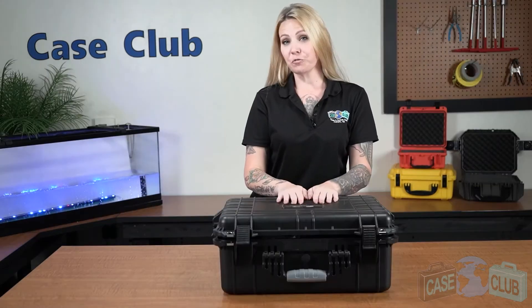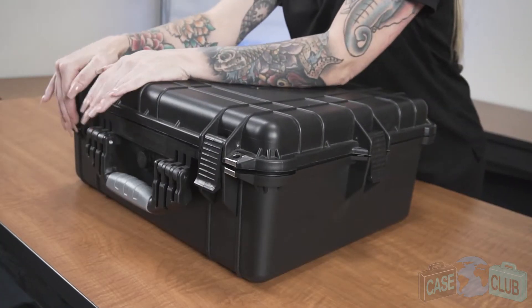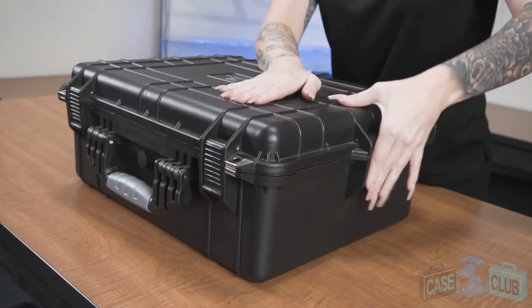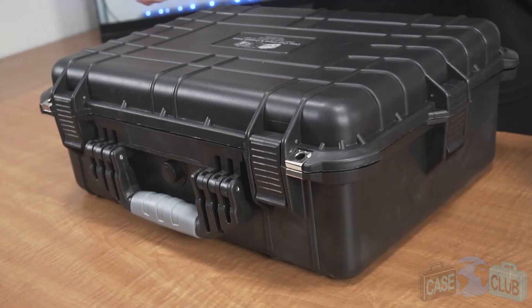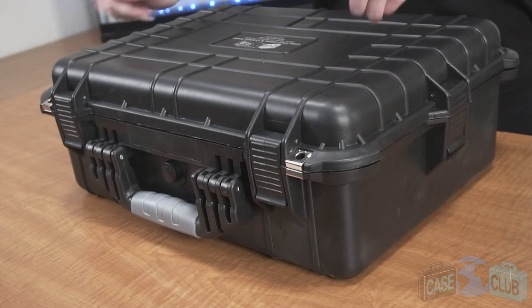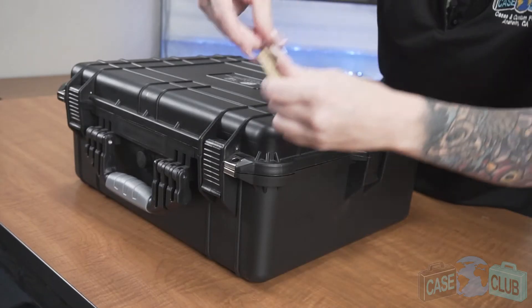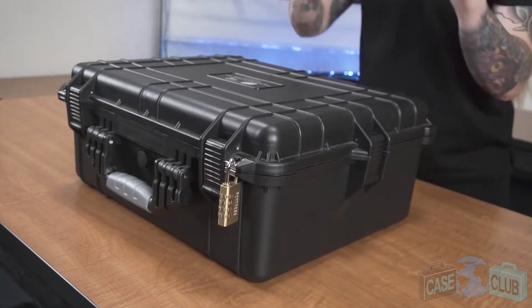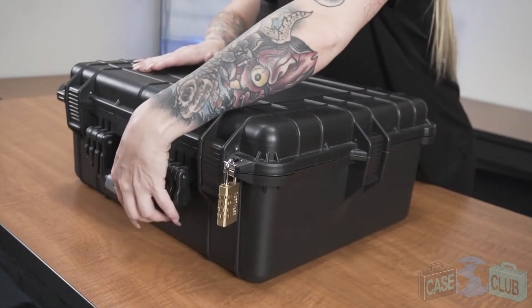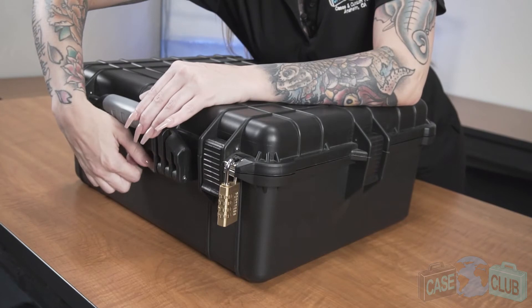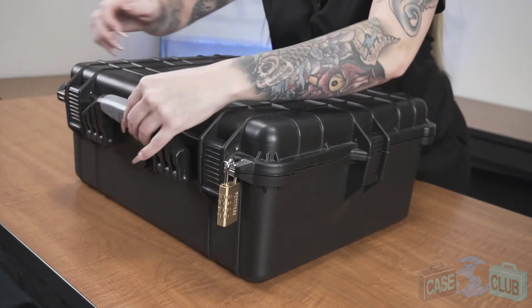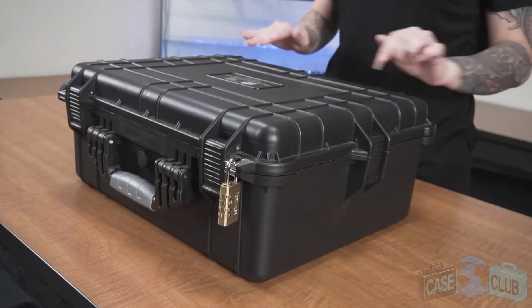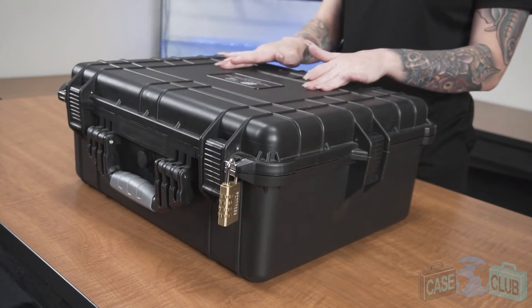The case features four snap latches with positive feedback. Two metal-reinforced padlockable holes that significantly increase security. A manual pressure relief valve so that the case can be opened at any altitude. A light orange peel texture to help prevent scratches.